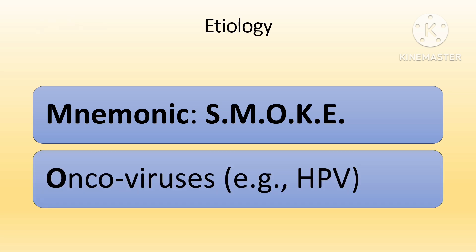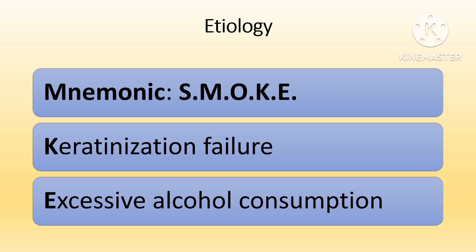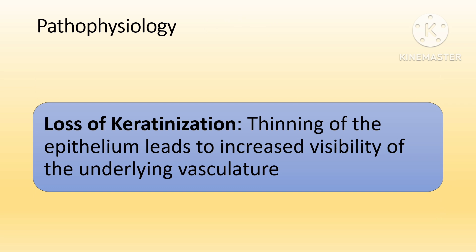Viruses like human papillomavirus (HPV) are linked to the development of oral cancers. These viruses can induce changes at the cellular level, promoting the transformation of normal cells into precancerous or cancerous cells. When the oral mucosa fails to produce enough keratin, the tissue becomes more vulnerable to injury and malignancy. Insufficient keratinization contributes to the development of smooth red patches characteristic of erythroplakia. Chronic alcohol consumption, particularly when combined with smoking, significantly increases the risk of oral mucosal changes.